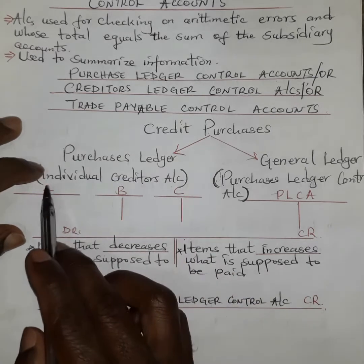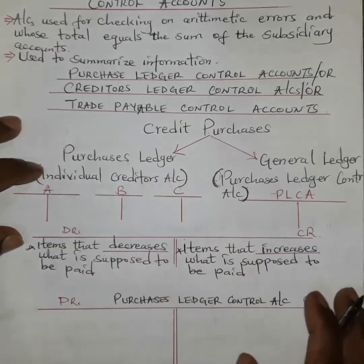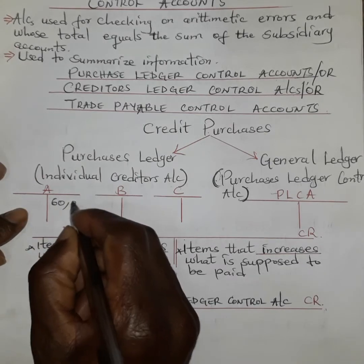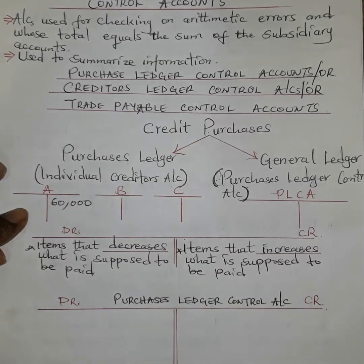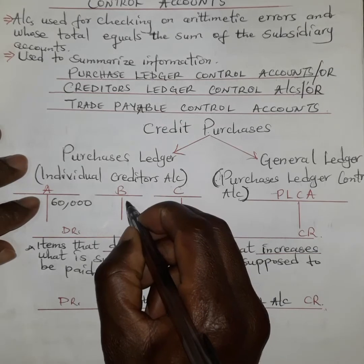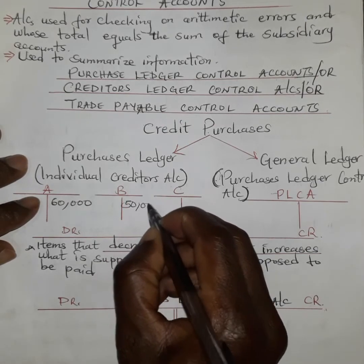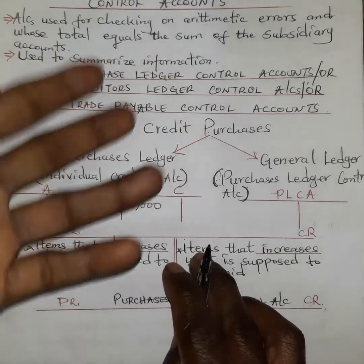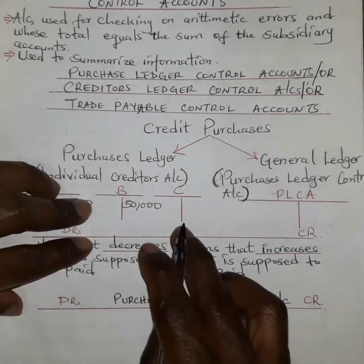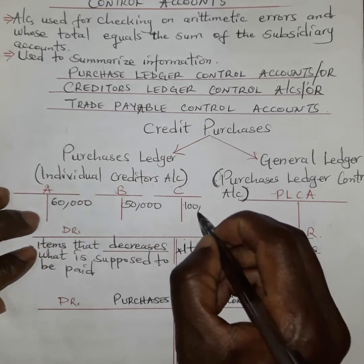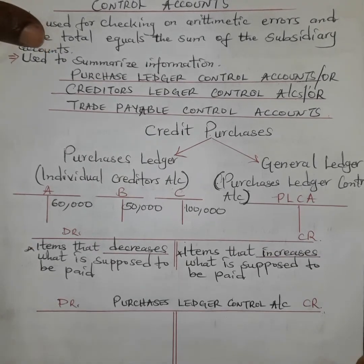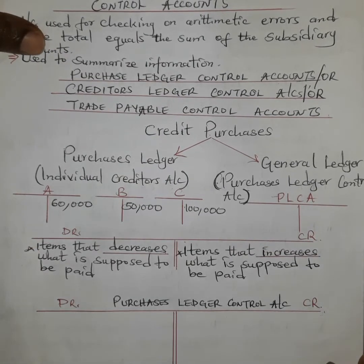For example, if this business has creditors A, B, and C: when they buy goods worth 60,000 from A, the liability increases and is therefore credited. Similarly, if they buy 50,000 from B, the liability increases and is also credited. And when they buy goods from C worth 100,000, that amount also increases and is credited.